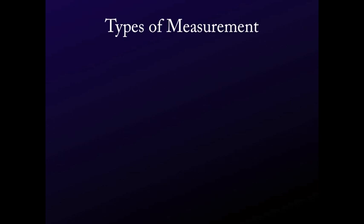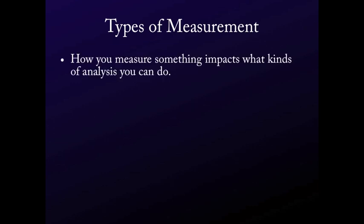Types of measurement is actually a part that in undergrad statistics is often not emphasized enough. It's incredibly important in research design and methodology. The main reason is that how you measure something impacts what kind of analysis you can do. If I ask 'do you like this?' on a yes/no scale, you won't be able to run the same statistics as if I asked 'how much do you like this?' on a one-to-seven scale. You want to think about measurement level before you run the research — I've gotten datasets where they didn't think about this and they're incredibly difficult to analyze.